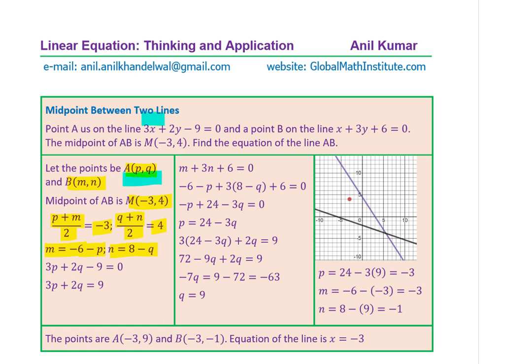Once you get M in terms of P and N in terms of Q, we can actually substitute and simplify our equations. Now, let's look into the other part, which is we know that the point A is (P, Q). And this point is on the line 3x plus 2y minus 9. And therefore, we can substitute P and Q for X and Y. Substituting the values, we get this point. So now we can rearrange and we get our equation. Let's call this equation 1.